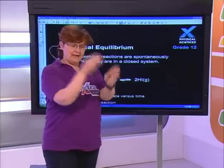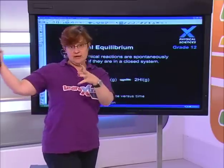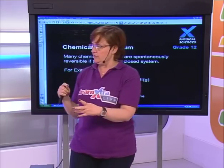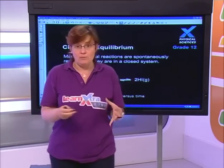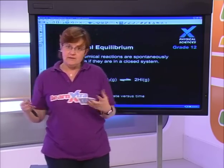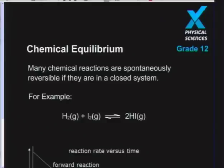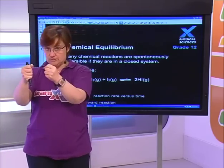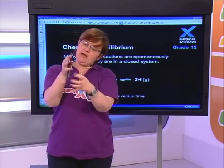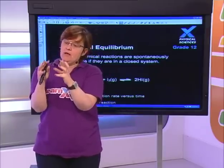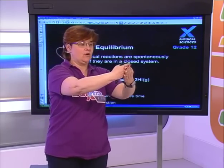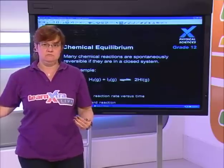For example, if we put magnesium in hydrochloric acid we get magnesium chloride and hydrogen gas — that is not going to reverse itself spontaneously. It needs a lot of help. But we can have other equations such as hydrogen plus iodine giving hydrogen iodide: H₂ + I₂ ⇌ 2HI. This reaction is spontaneously reversible.